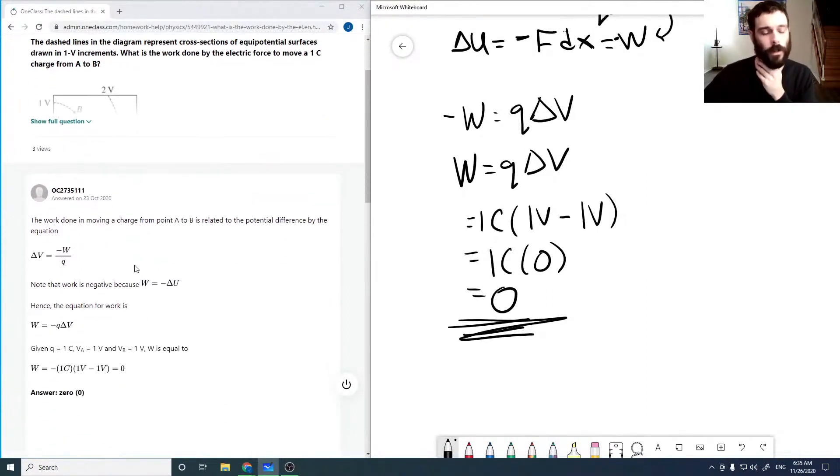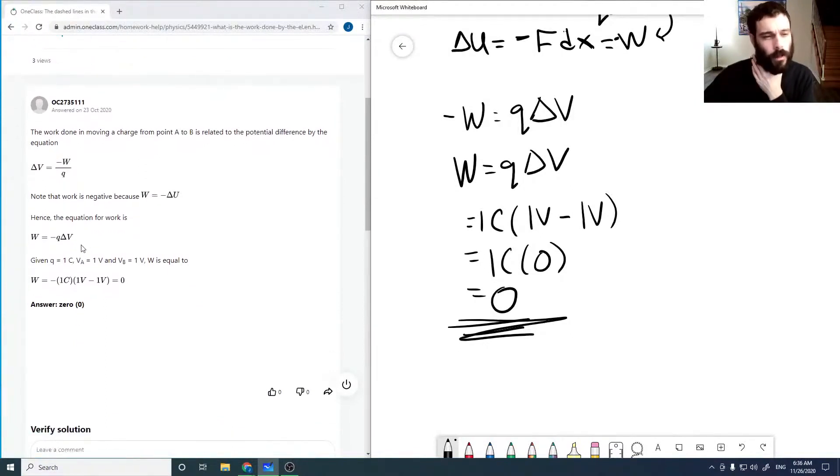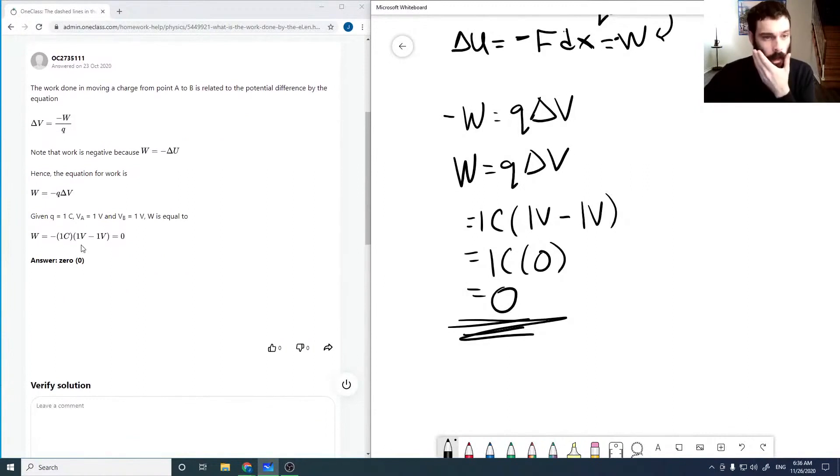Okay, so let's look at the solution. So the work done in moving a charge from point A to B is related to the potential difference. We know that the work is negative, hence the equation for work is this. Given those values, we get 0. So the solution is correct.